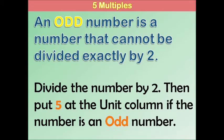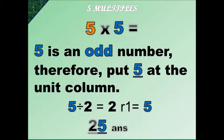Here we have an odd number — a number that cannot be divided exactly by two. Divide the number by two and then put five behind it. So we have five times five — you divide five by two, then you have two, remainder one. You make the remainder one into five and put it behind the two. That means twenty-five. So five times five is twenty-five.